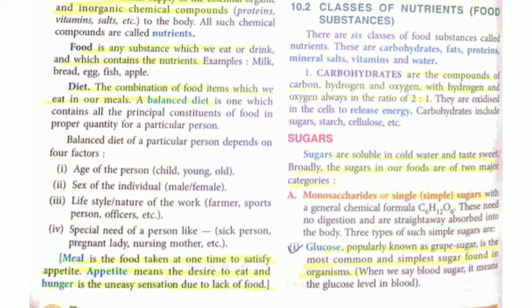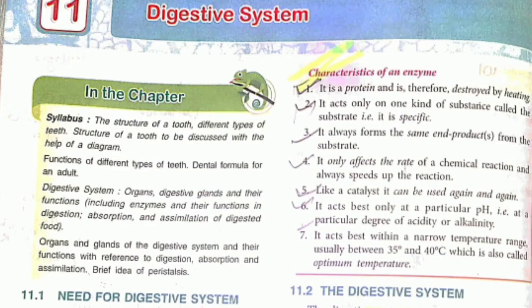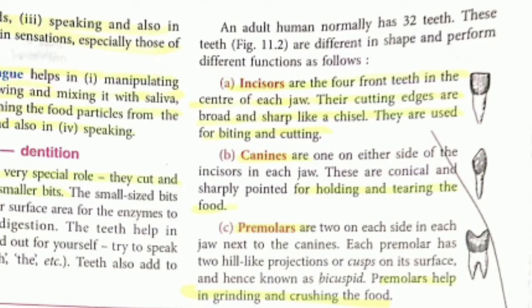Now let's talk about the digestive system. Learn the definition of digestion, the definition of enzymes, and the characteristics of an enzyme. This chapter has the most important topics that your teacher will mostly ask in your question paper, so learn these things. Next, learn about the teeth — the classification and the different types of teeth.